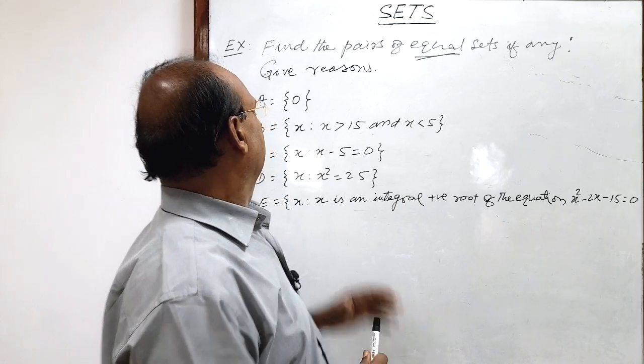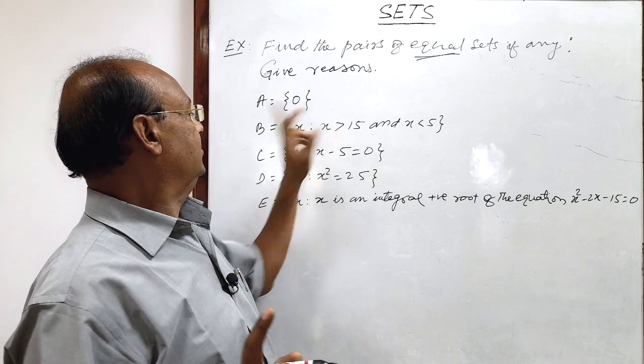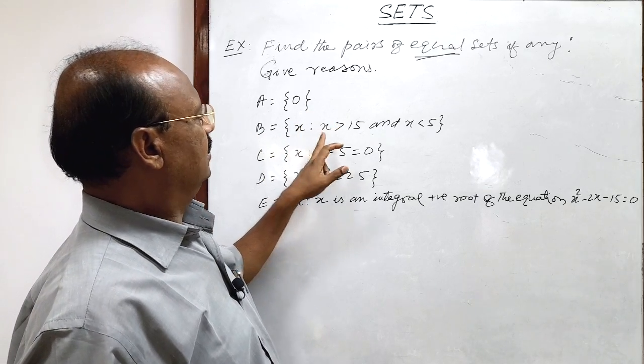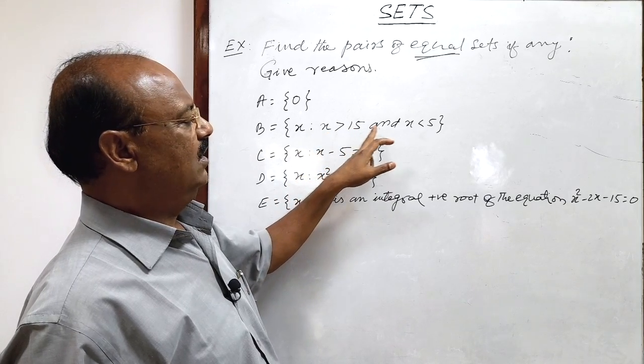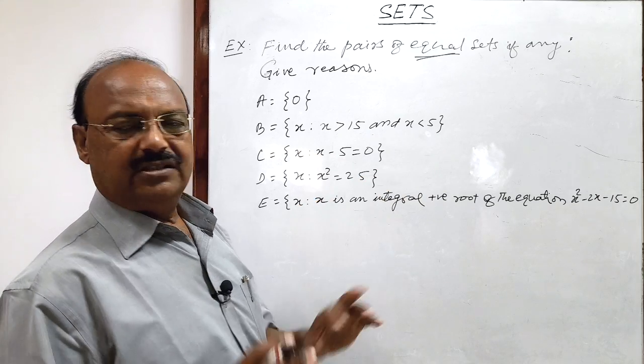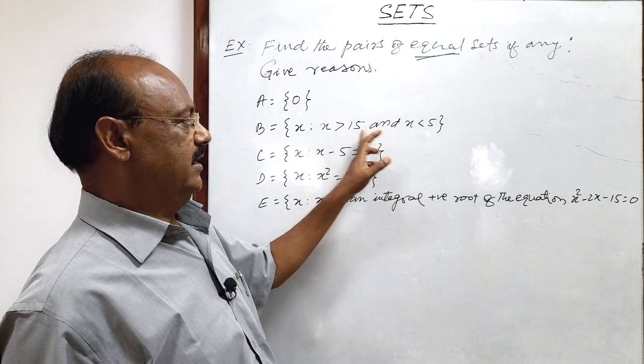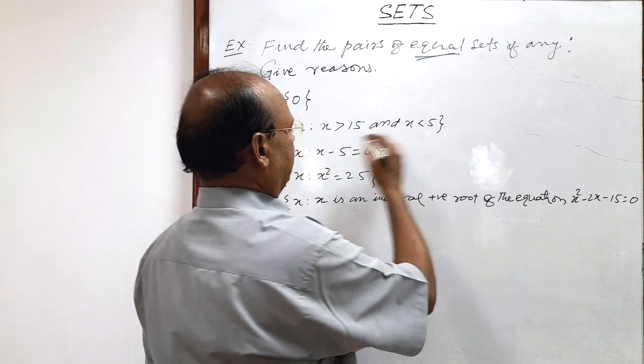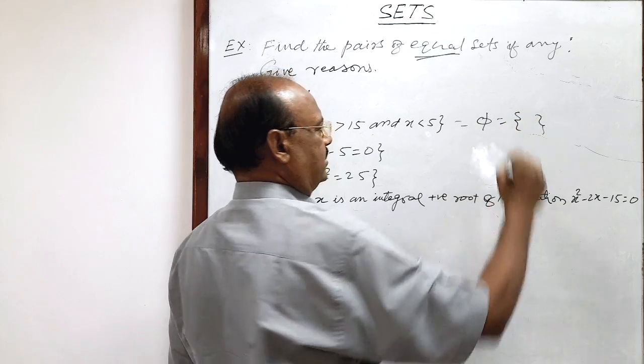So let us see here set A is a singleton set having only one element 0. Set B is mentioned here x such that x is greater than 15 and x is less than 5. So there is no such number which is less than 5 as well as greater than 15. So this is a null set, this is a void set, empty set.